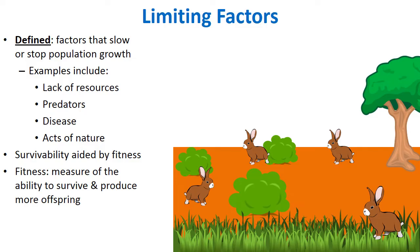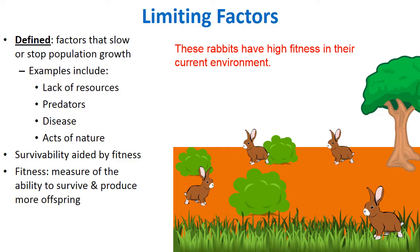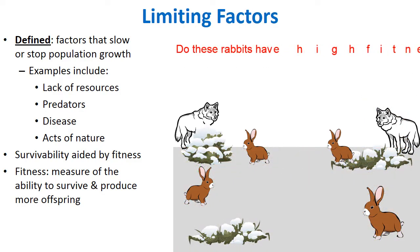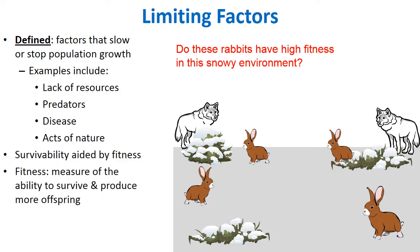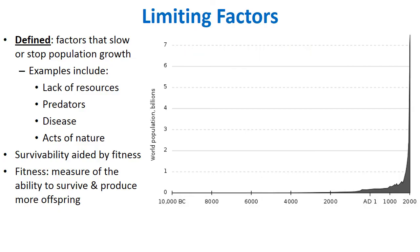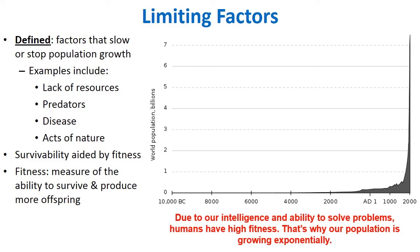The brown rabbits from earlier have high fitness in their environment, but if the environment changes to a snowy one, they no longer do — they'd be easily hunted by arctic wolves. Ironically the white rabbits would have much greater fitness in that snowy environment. Looking at the human population graph, due to our high intelligence and problem-solving ability, humans have very high fitness. We've been able to fight disease, build shelters, and produce more food, allowing us to survive in environments where we previously couldn't.